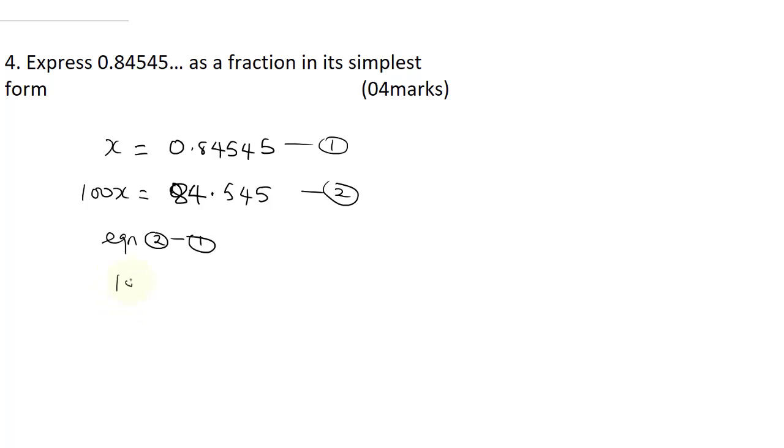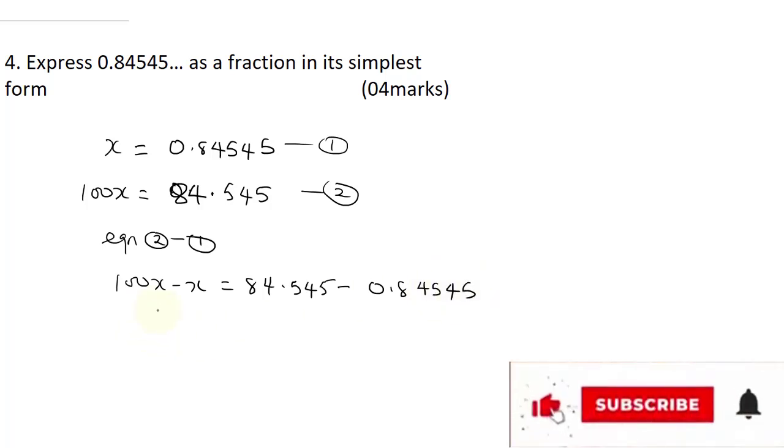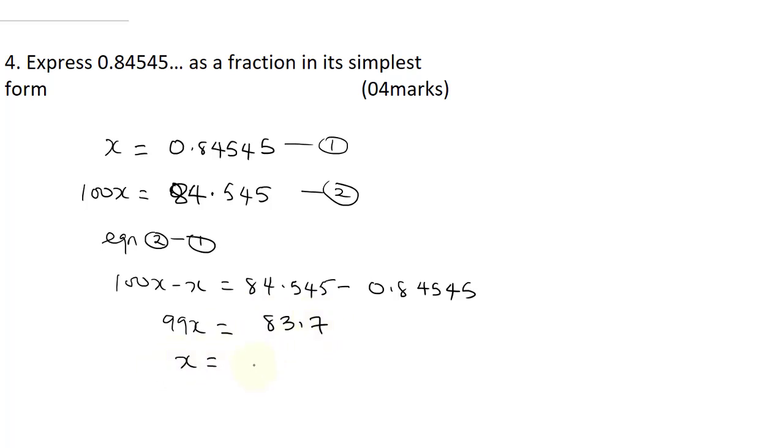So, this is going to be 100x minus x is equal to 84.545 minus 0.84545. Now, when I do 100x minus x, I'm going to get 99x is equal to, when I do 84.545 minus 0.84545, this would give me 83.7. Now, from here, x is going to be 83.7 all divided by 99. Now, in order to divide this, I'll take out the decimal place by multiplying both up and down by 10.